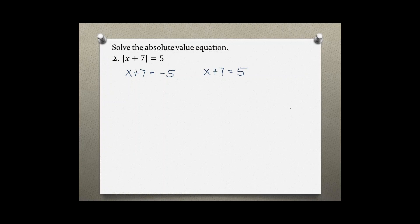As you can see, we have a negative version and a positive version of this absolute value equation. Now let's solve the left side. Solving for x, we bring the 7 over by subtracting it from both sides, and that leaves us with x equals negative 12.